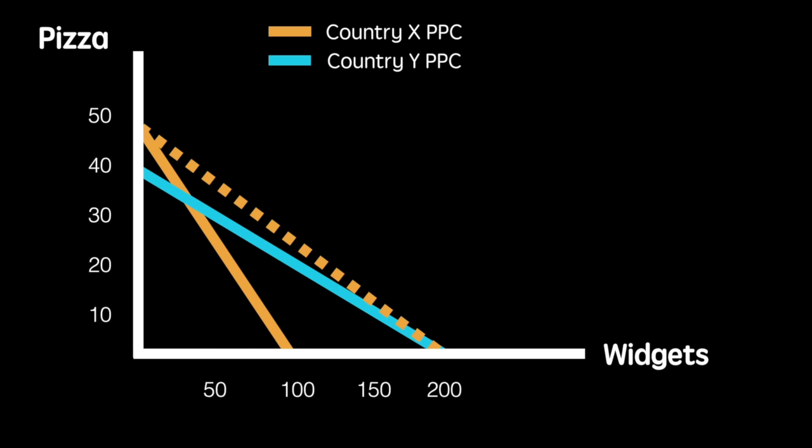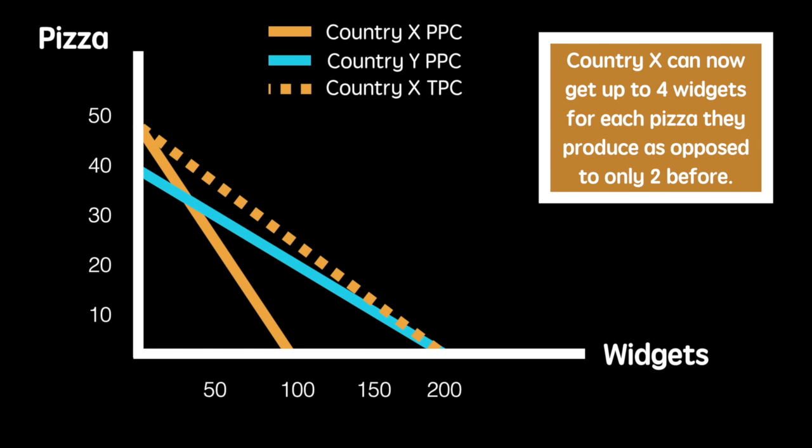However, they are now able to trade those 50 pizzas for up to 200 widgets that will be produced from Country Y. You can see the shift of their PPC to the TPC, which leads to improved consumption combinations for the country.